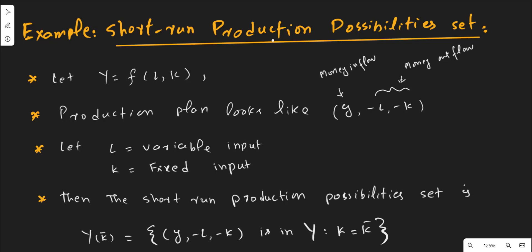Let us assume that the production function is something like this: Y is a function of labor and capital. This is an example of a neoclassical production function because we can see that the number of factor inputs in our case is equal to two.